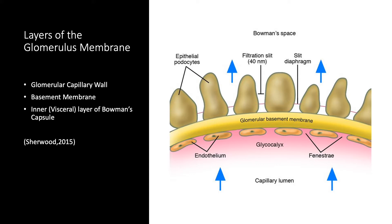Because the glycoproteins are negatively charged, they repel albumin and other plasma proteins, which are also negatively charged. Therefore, plasma proteins are almost completely excluded from the filtrate, with less than 1% of albumin molecules escaping into Bowman's capsule. The small proteins that do slip into the filtrate are picked up by the proximal tubular cells via receptor-mediated endocytosis, then degraded into constituent amino acids that are returned to the blood. Thus, urine is normally protein-free.